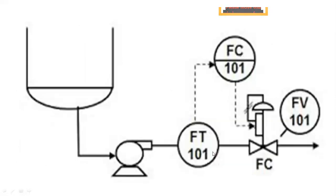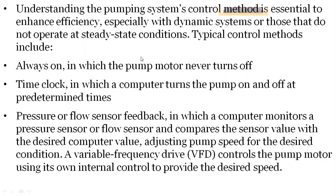For typical pump control, you have a flow transducer feeding a flow controller which operates a flow control valve. Understanding pumping system control methods is essential to enhance efficiency, especially in dynamic systems that do not operate at steady-state conditions. Typical control methods include: always-on (motor never turns off); time-clock control (computer turns pump on and off at predetermined times); pressure or flow sensor feedback (computer monitors sensor and adjusts pump speed); and variable frequency drive (VFD), which controls motor speed — more speed means more pumping, less speed means less.